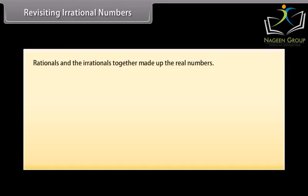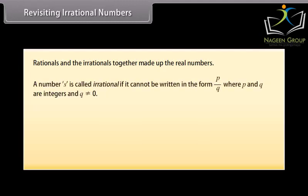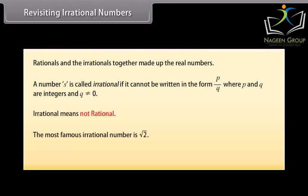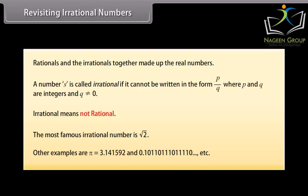Revisiting irrational numbers. We know that rationals and irrationals together make up the real numbers. A number s is called irrational if it cannot be written in the form p/q, where p and q are integers and q is not equal to 0. Irrational means not rational. The most famous irrational number is √2. Other examples are π, which is equal to 3.141592..., and 0.1011011101110...